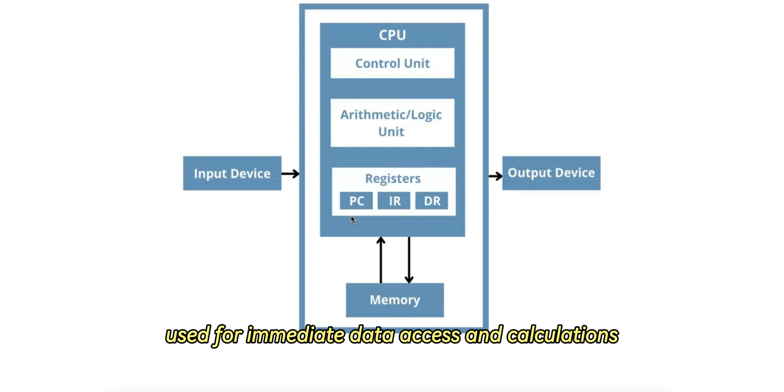So in summary, registers are fastest, used for immediate data access and calculations, but they are limited in size, ideal for on-the-fly operations. They store instruction pointers, operands, and status flags.